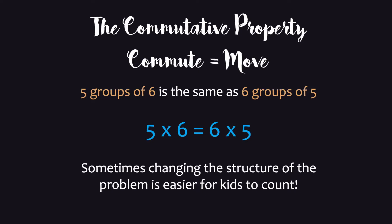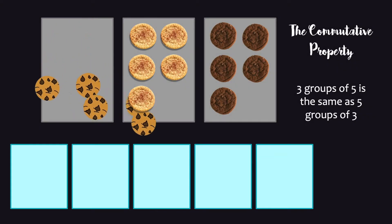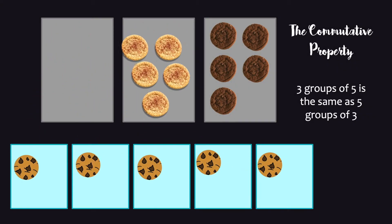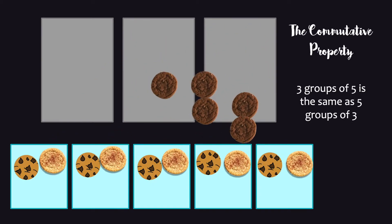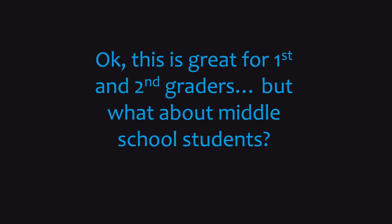As a recap, we took cookies and put them in different boxes. This shows that if we had three groups of five, it's really the same as five groups of three. If kids knew how to count by threes, this would be good for them to do. It's just nice to see that we can change the structure. Some of you might be wondering: this is great for first and second graders, but what about middle school, high school, even adults?